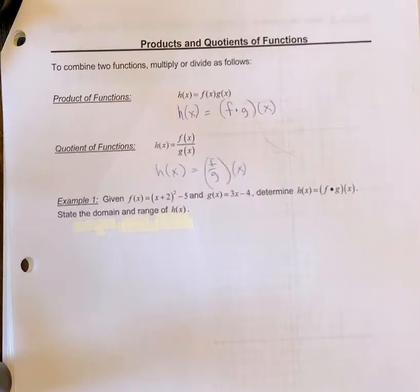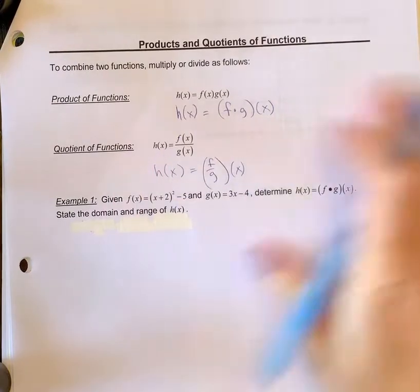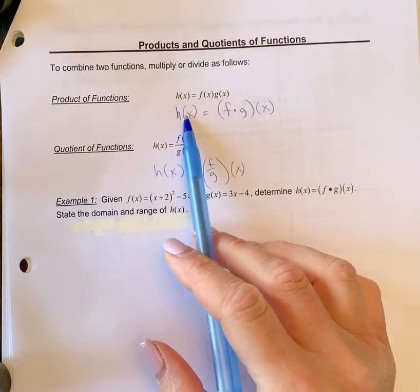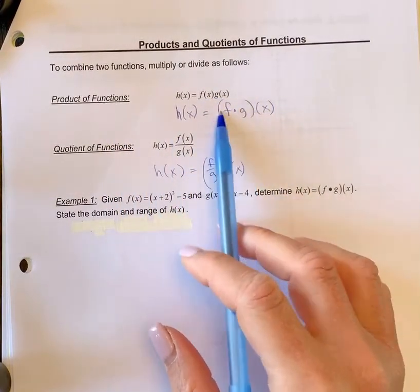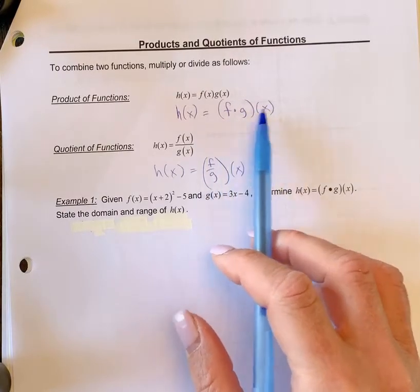Products and quotients of functions. We can have a product where we multiply. So h(x) can be f(x) times g(x). f and g can be written in the same brackets, so f times g of x.